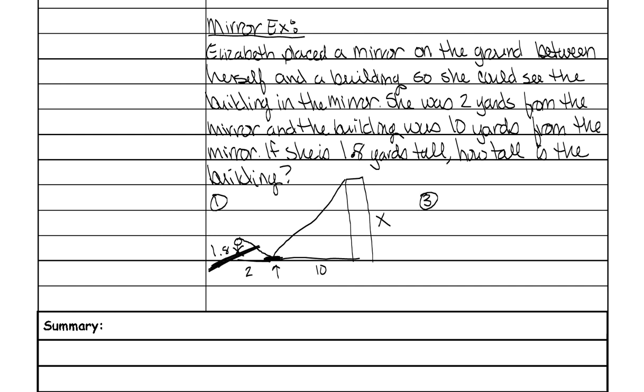And we're going to do 1.8 over 2 and x over 10. Cross multiply. 2x is equal to 1.8 times 10 is 18. Divide both sides by 2. And x is 9. So what did we actually find? The building is 9 feet, 9 yards tall.